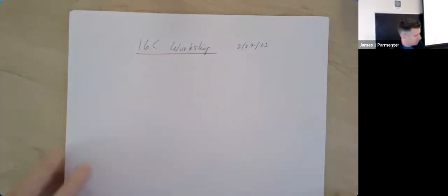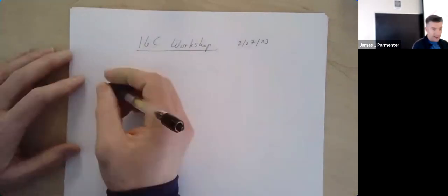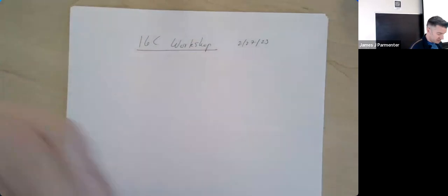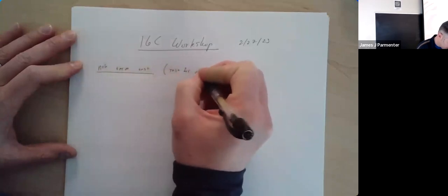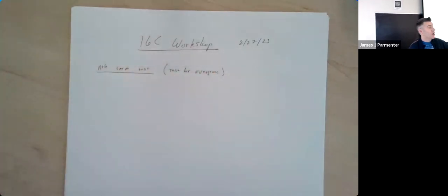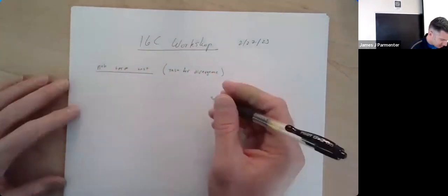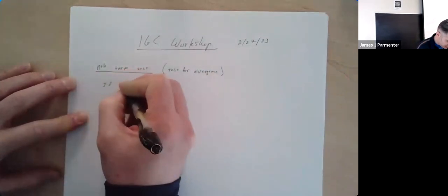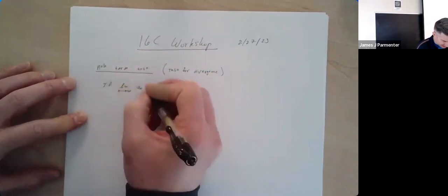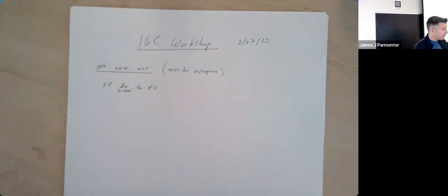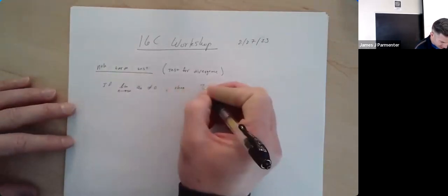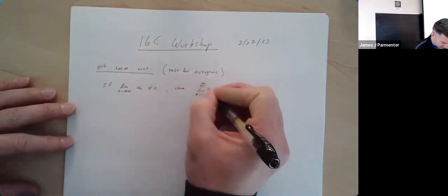Just to expand on that for a second — it's worth reiterating because it comes up all the time. The N-term test, also known as the test for divergence. Why do we call it the test for divergence? It says: if the limit as N goes to infinity of the sequence is not zero — meaning the sequence could either converge to a number like 5, or the limit could not exist — then the series from N equals 1 to infinity of A sub N diverges.